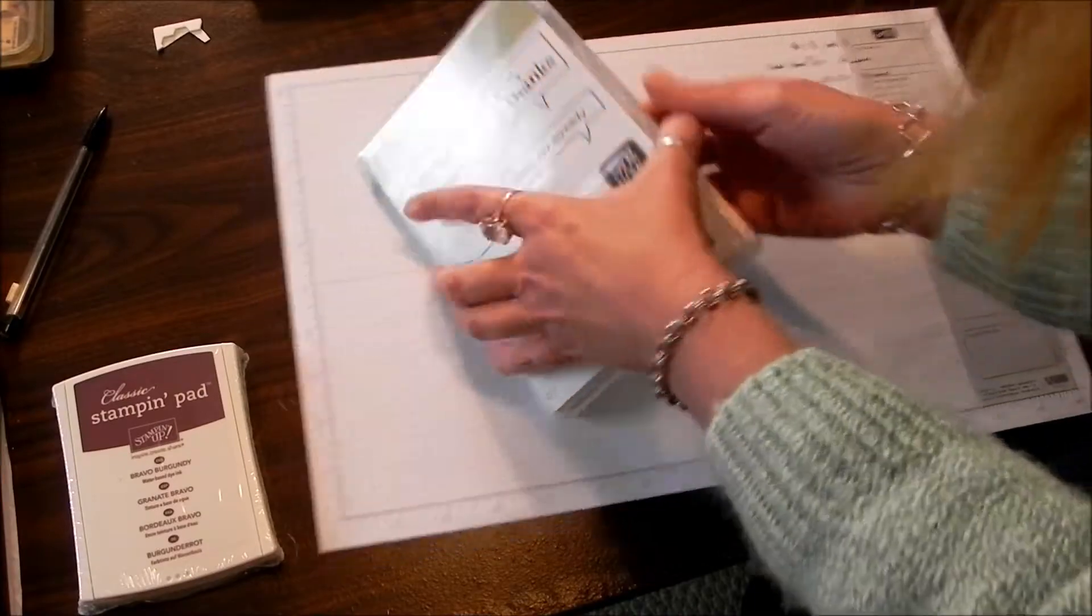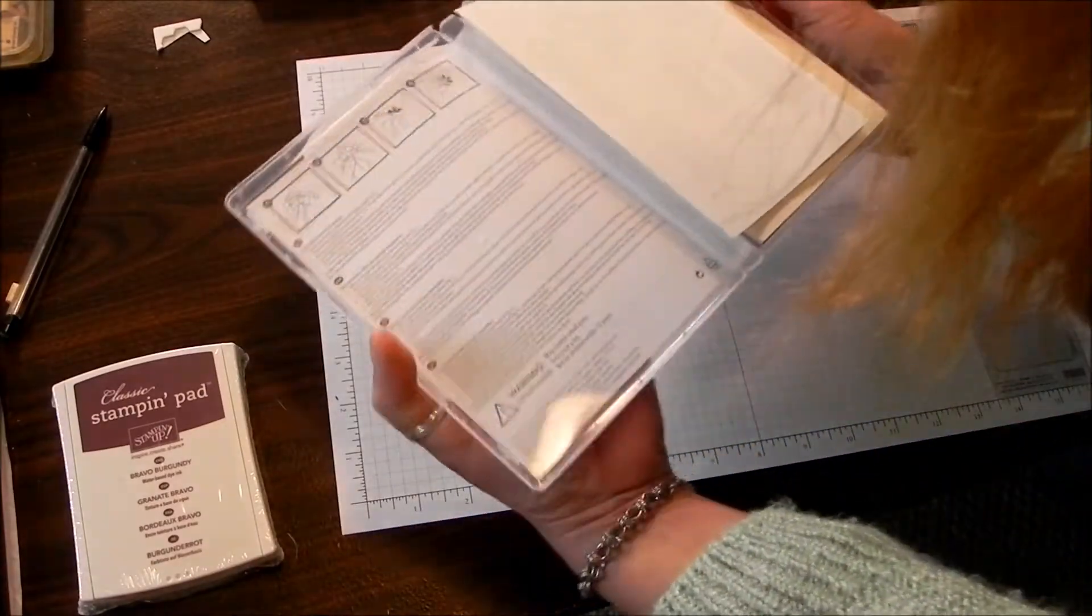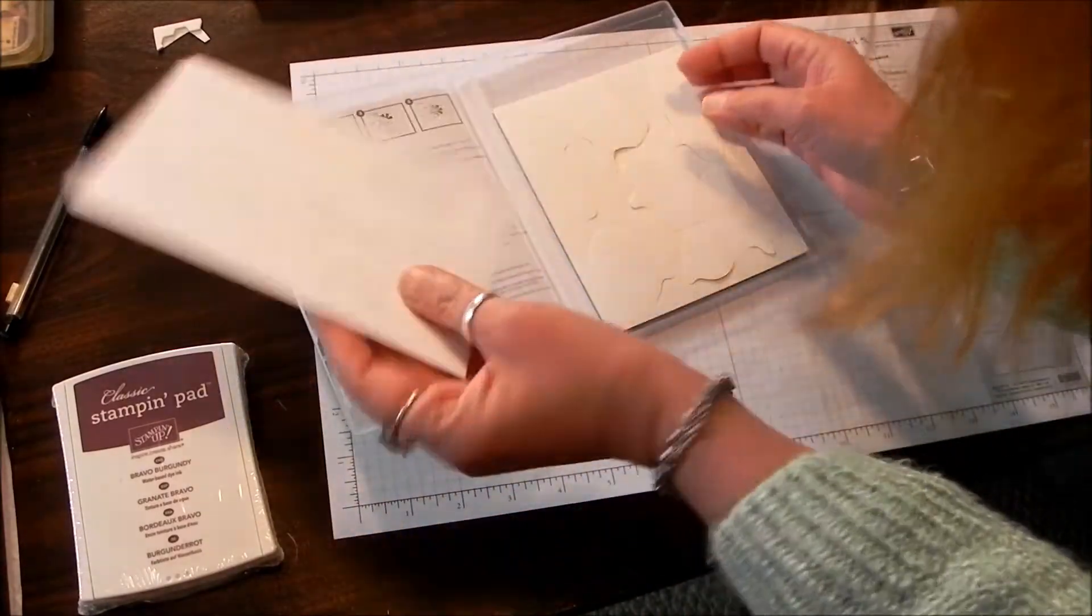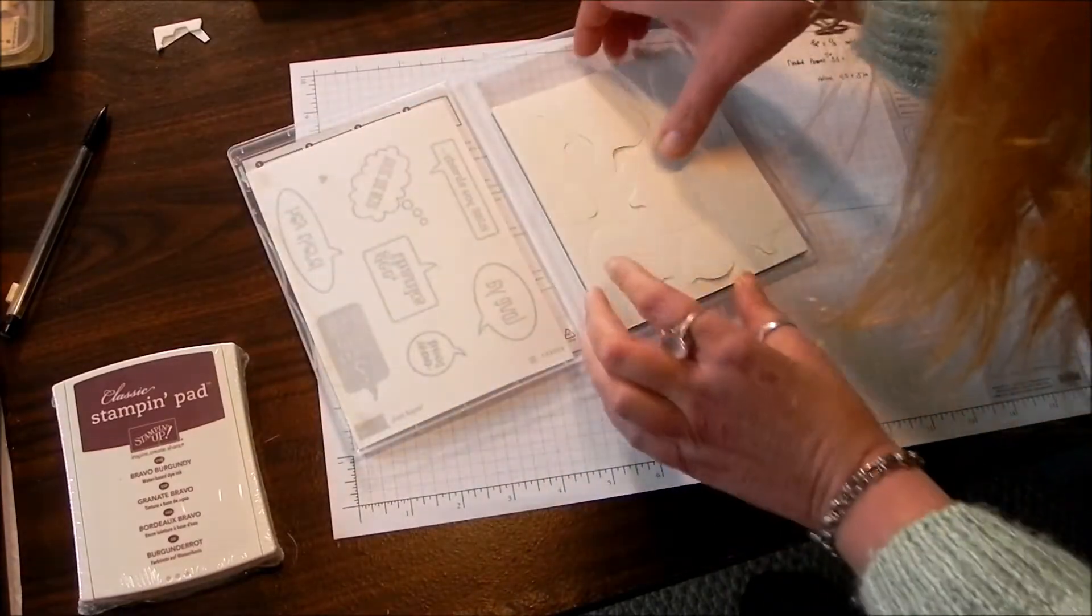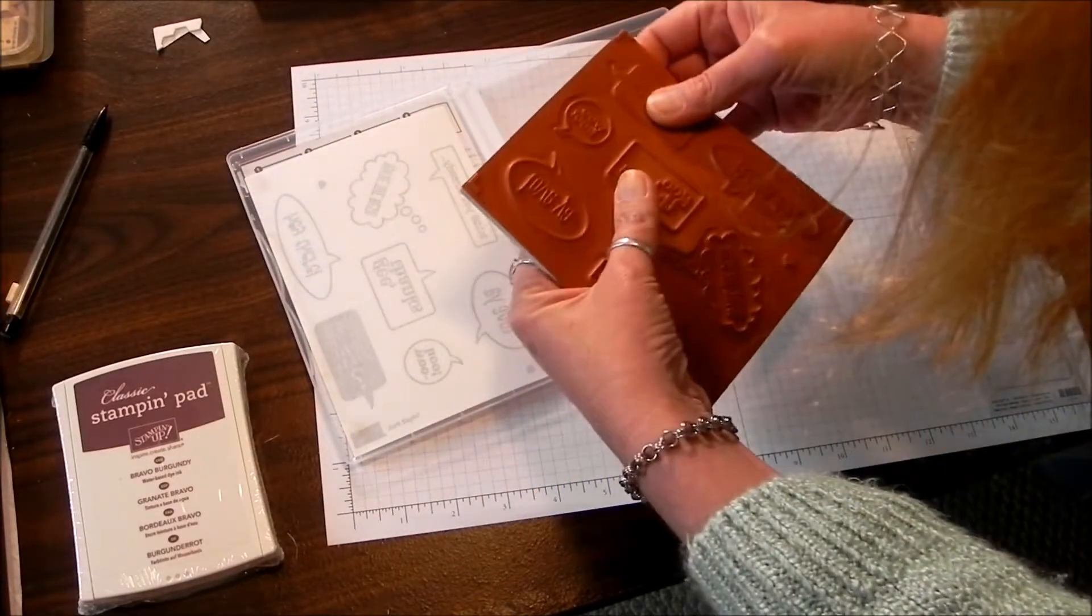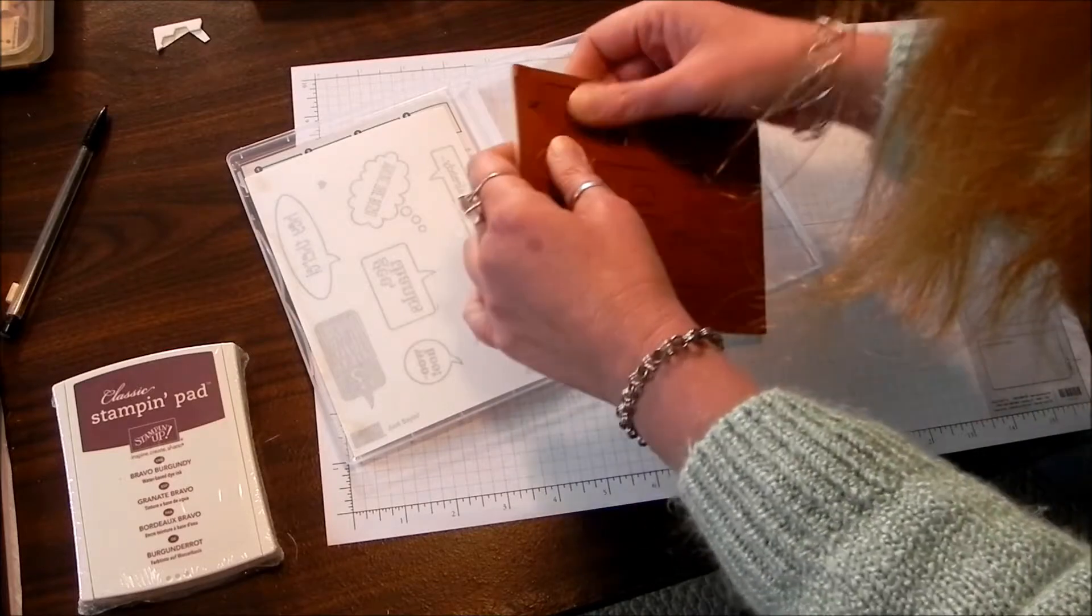This is the Just Sayin' clear stamp set from Stampin' Up. You've got your sheet with the labels on it and you've got your set of stamps. The first thing you want to do is punch all these out.